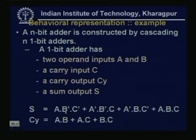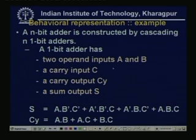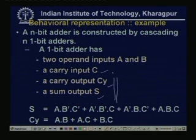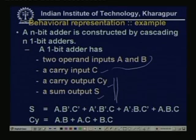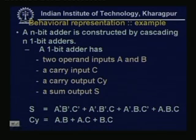For behavioral representation we give one small example. An n-bit adder is constructed by cascading 1-bit adders. A 1-bit adder has two operand inputs a and b, a carry input c, a carry output cy, and a sum output s. We already know the sum expression: s = a·b'·c' + a'·b'·c + a'·b·c' + a·b·c, and carry output cy = a·b + a·c + b·c. These are the two Boolean equations representing the behavior of a 1-bit adder.